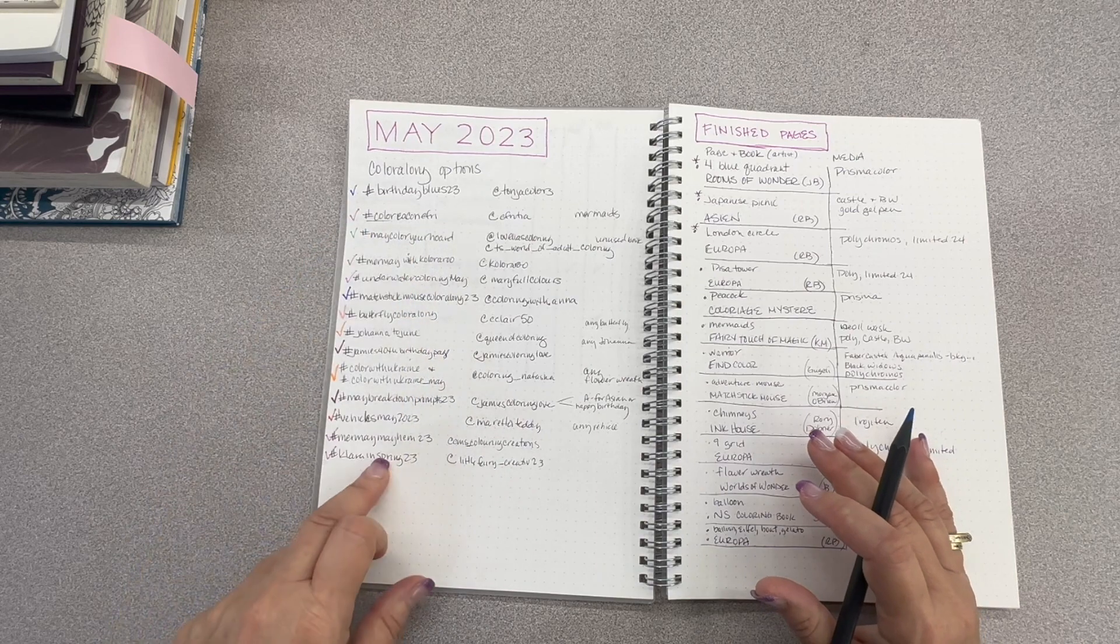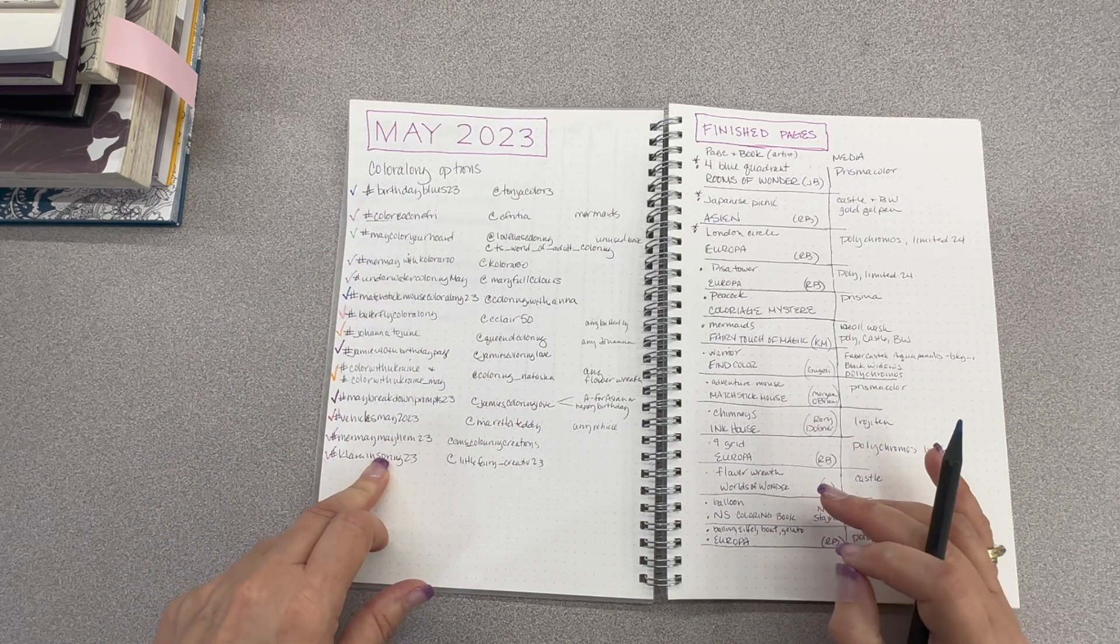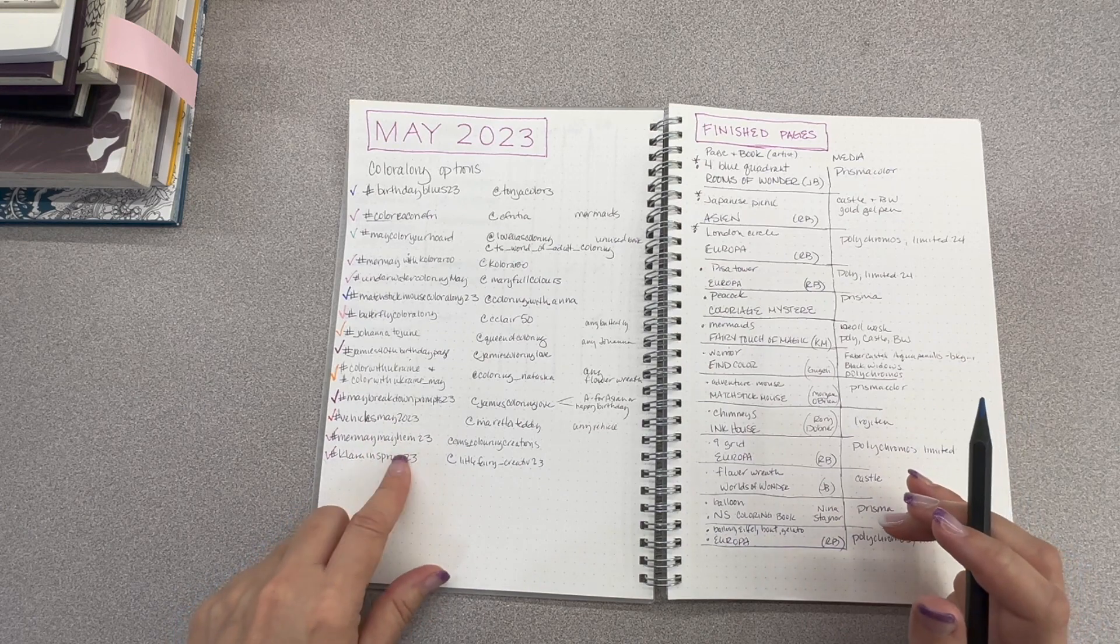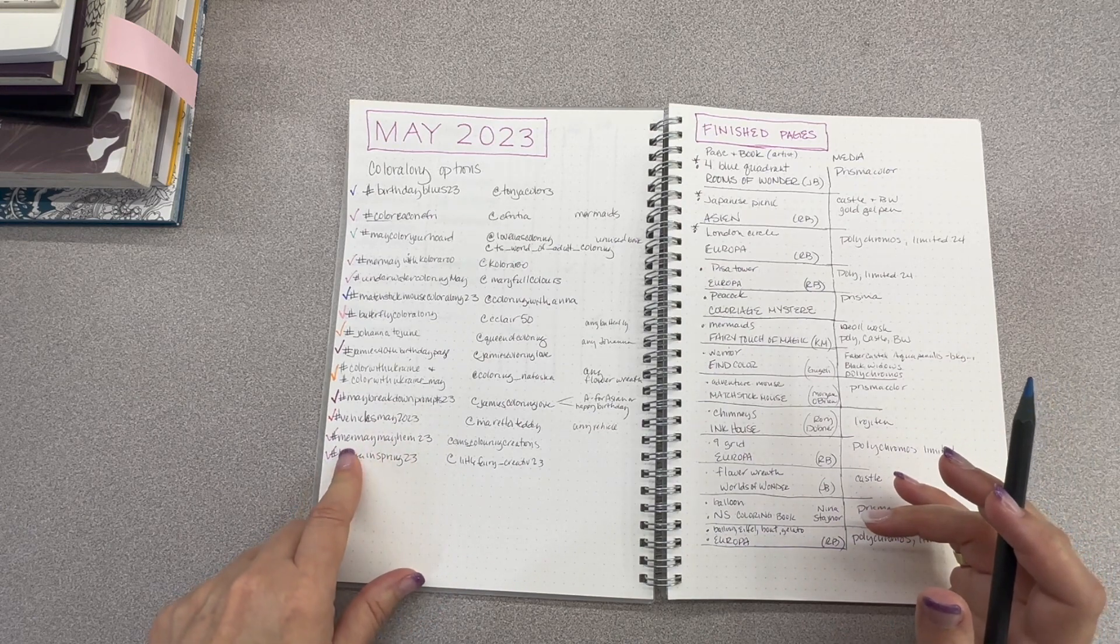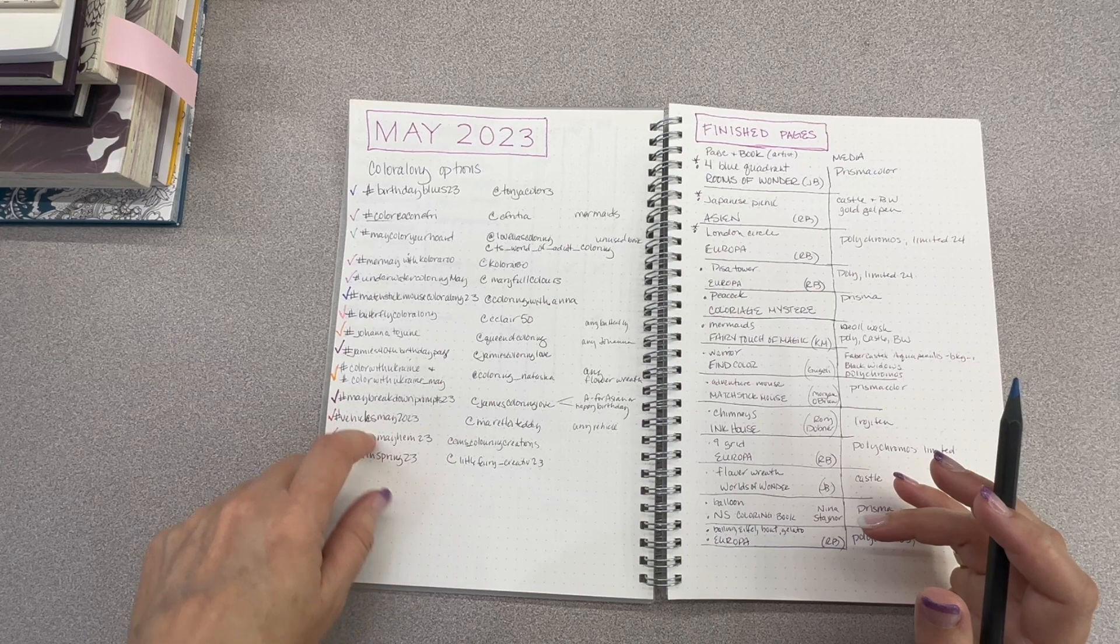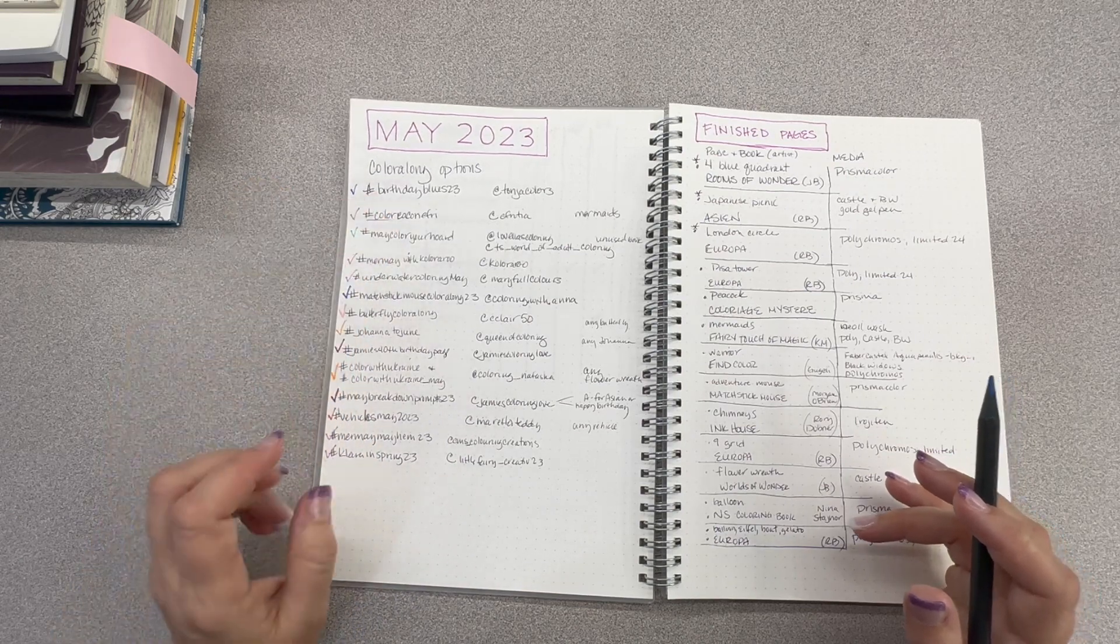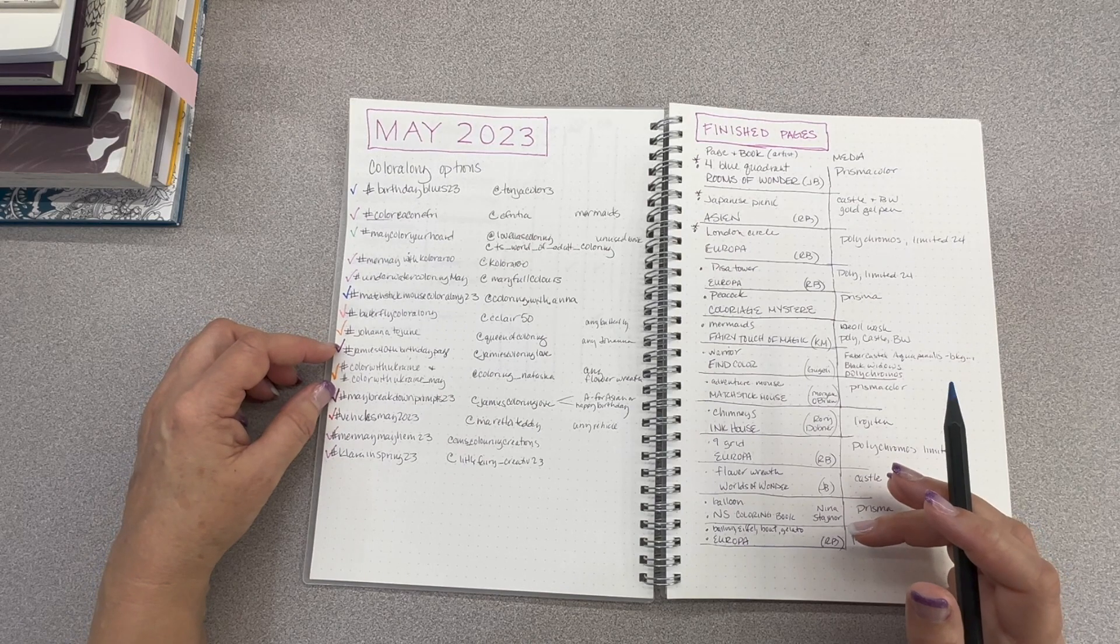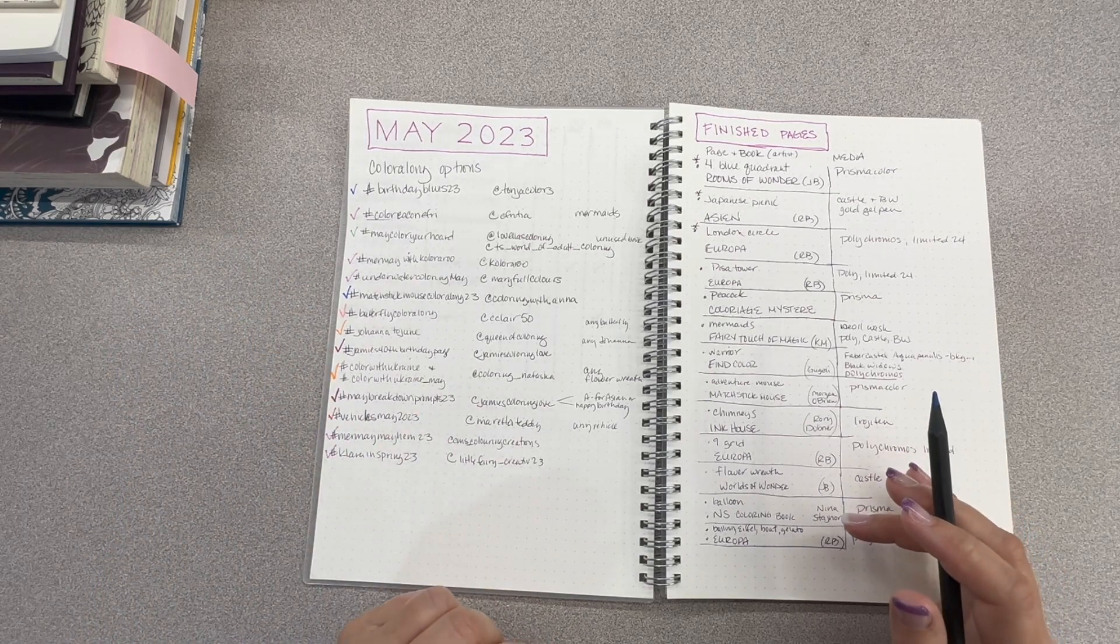Even one would be nice, but I was actually able to complete them all, and it was really nice, just fulfilling to be able to check them off the list. And I did 14 color alongs, even though I didn't finish 14 pages. For Mermaid that one picture covered one, two, three, four, five of them. So that was kind of fun to, this one color covered two different prompts. So that was kind of fun to keep track of that.